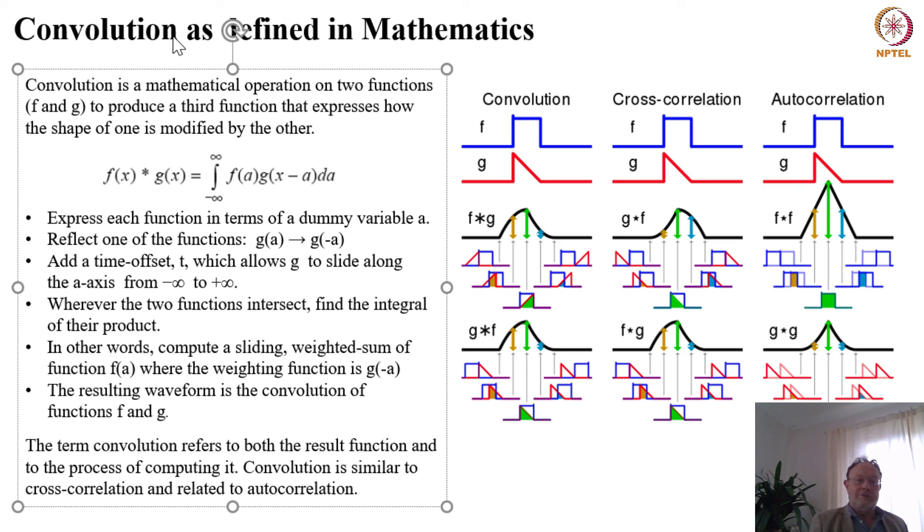So the problem that remains is to define this function in the two middle phases. So what we do is we compute the sliding weighted sum of function f with the weighting function g(-a), and then the resulting waveform is the convolution.